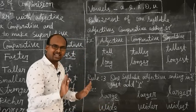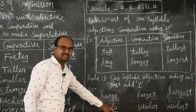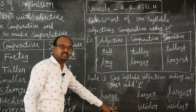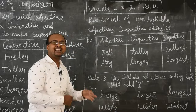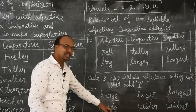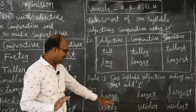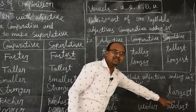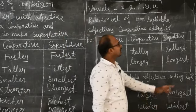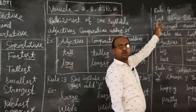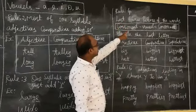Here, 'wide' — this adjective ends in E. So what do we do? We merely add R. Because E is already there, no need to add ER again. Just add R: wider. And superlative as usual: widest.